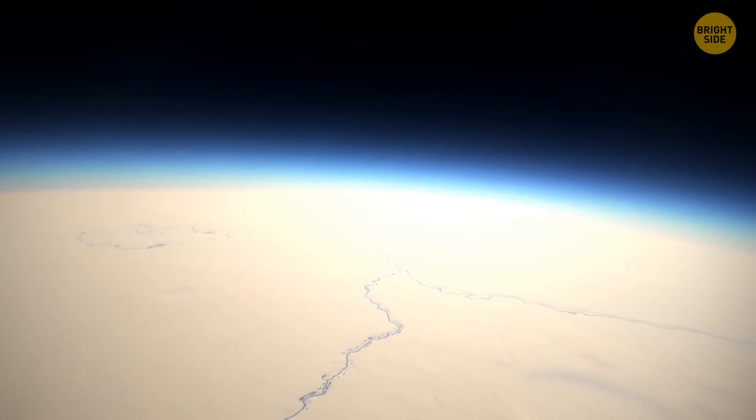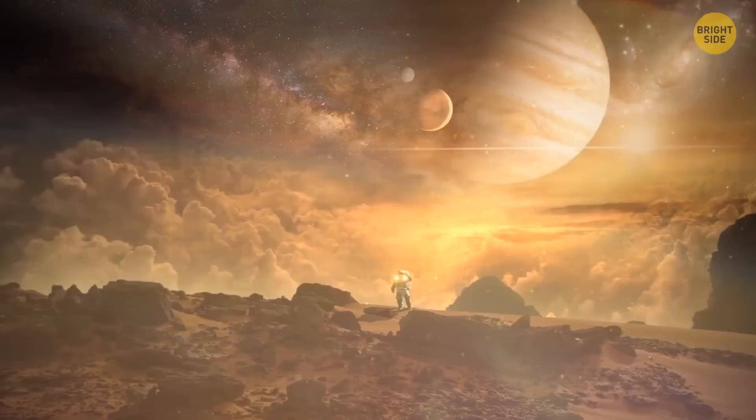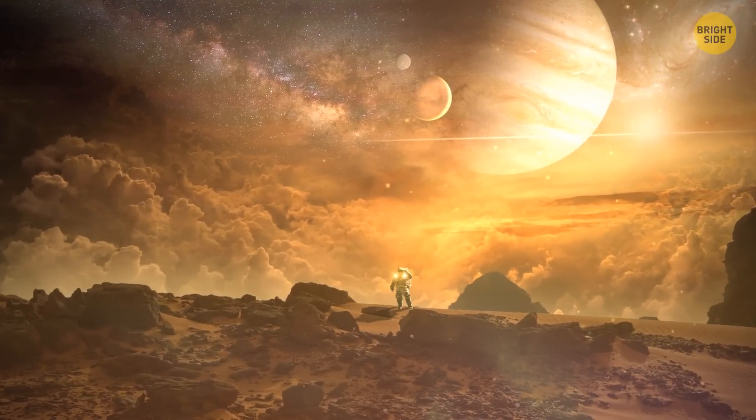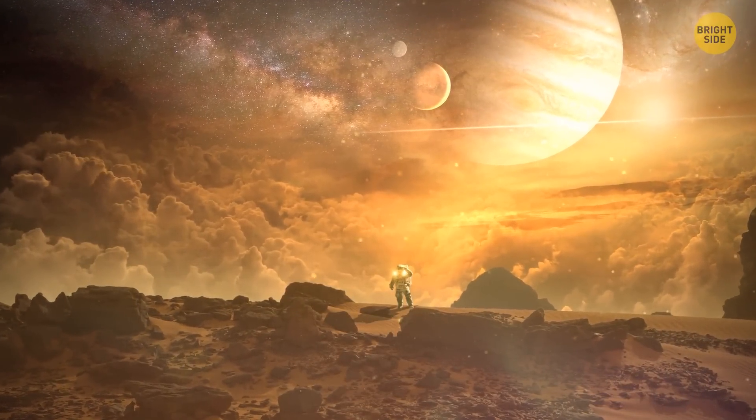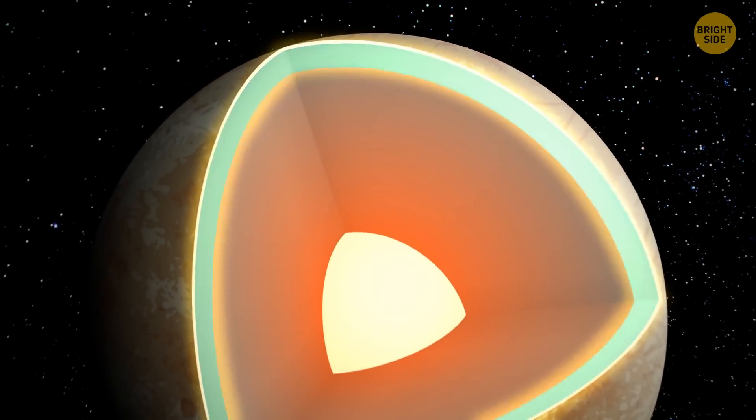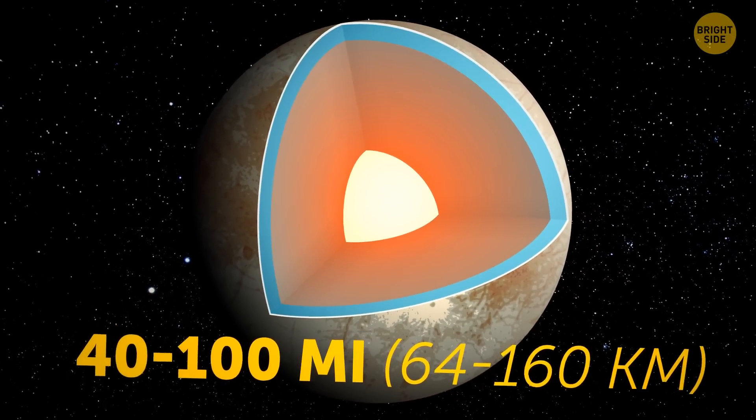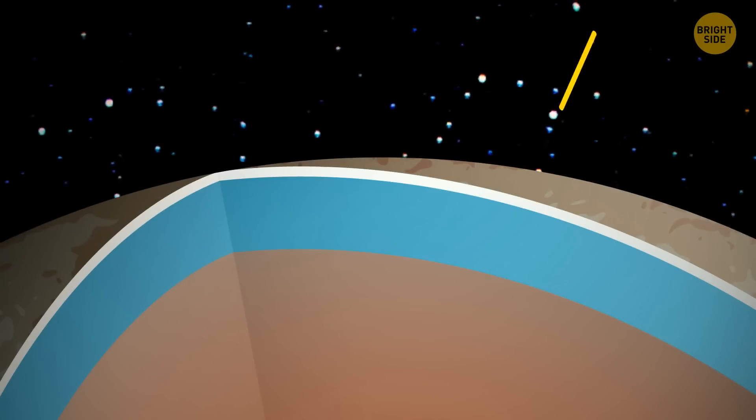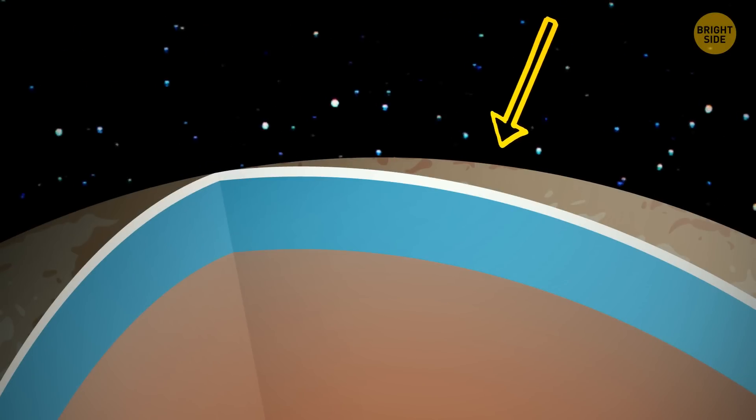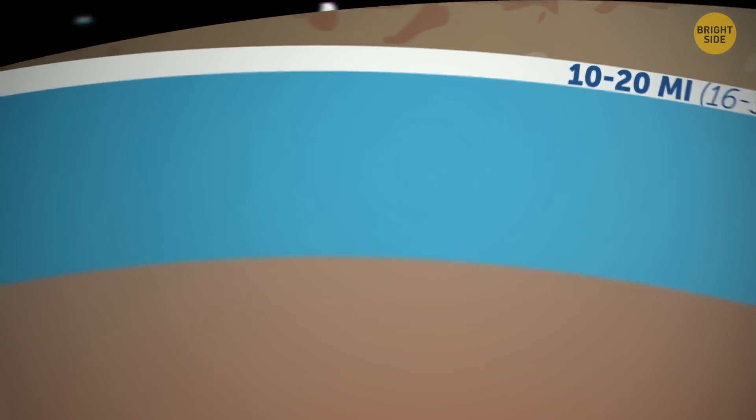But the coolest thing about this faraway place, it might host life. Astronomers consider Europa one of the most promising places in the solar system to search for new life forms. All because this moon has a huge saltwater ocean with a depth of 40 to 100 miles. Yes, it is hidden under a layer of ice that is estimated to be from 10 to 20 miles thick. But it is still potentially habitable.